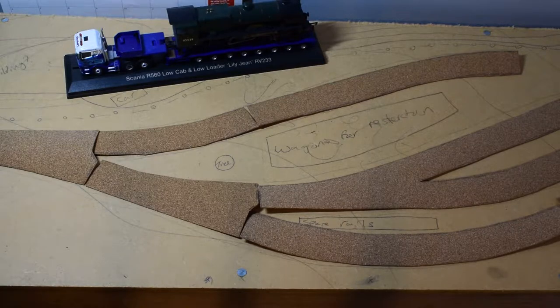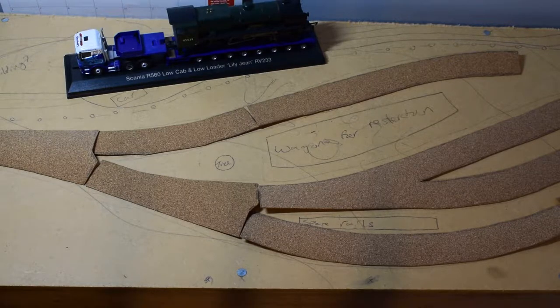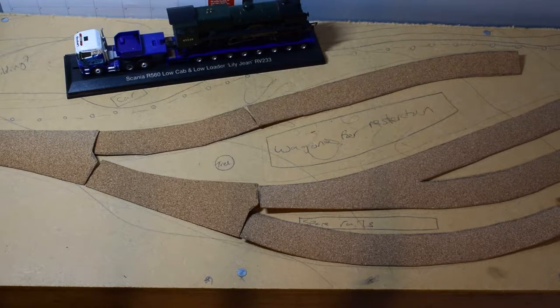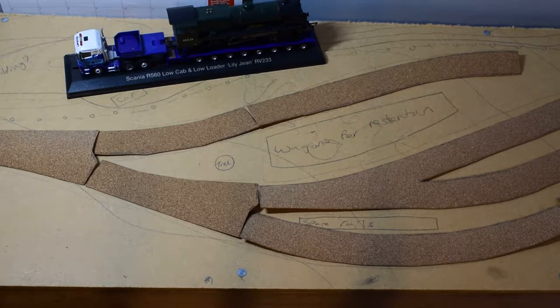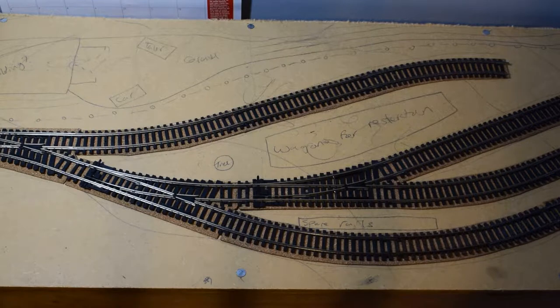Sorry for the change of lighting, the sun was hitting my board and throwing the camera off balance. Next thing we'll do is see if the track fits on right. The next thing I'm going to do is going to seem a bit backwards or strange, but I'm going to glue it down and leave the track on. When I was lining this up, the cork was everywhere and I didn't know what the track looked like. I'm going to keep the track on there, make sure it's all nice and tight, and glue it down underneath using PVA.